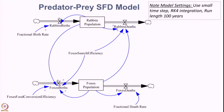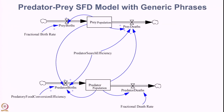Note that the model used a very small time step with RK4 integration and a run length of 100 years. In the classical predator-prey model, instead of rabbits and foxes we can use generic terminology of prey and predator, extending the model to a variety of scenarios — grass and deer, deer and lions, and so on. A similar structure for predator and prey populations will result in oscillatory behavior. Thank you.